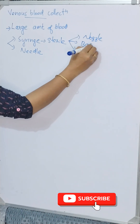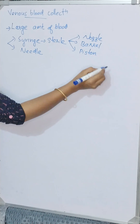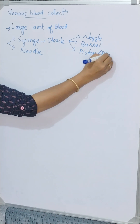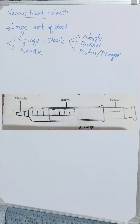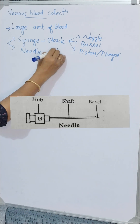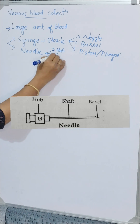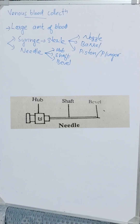The barrel is the outer part which contains graduation as per its capacity. Blood is taken into the syringe by the movement of the piston, also called the plunger. The nozzle is the part to which the needle is attached. The needle consists of three parts: hub, shaft, and bevel. The hub of the needle is fixed to the nozzle of the syringe.